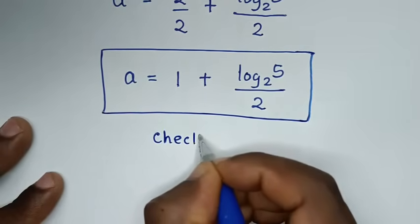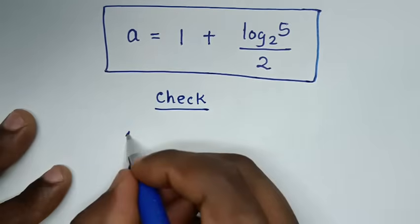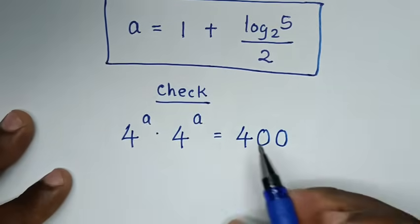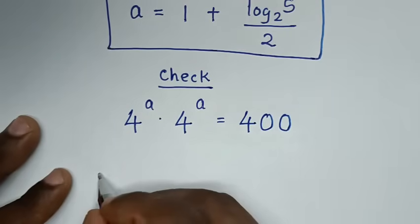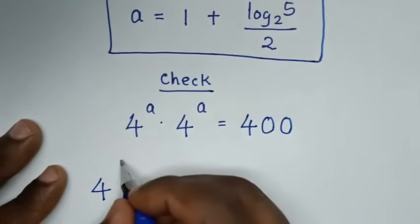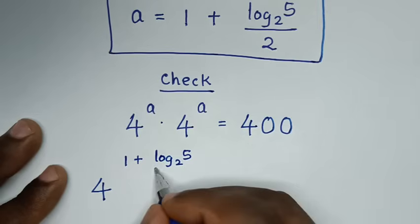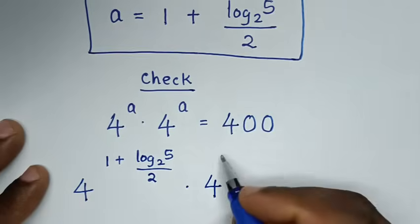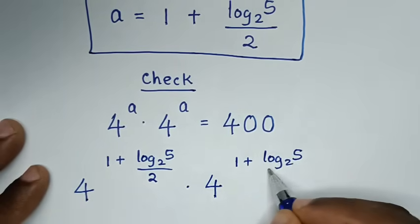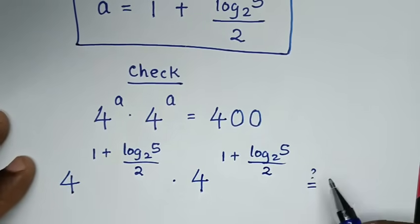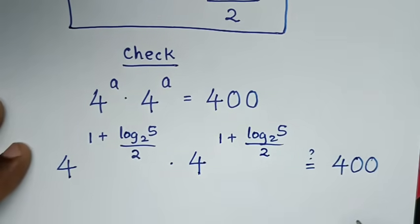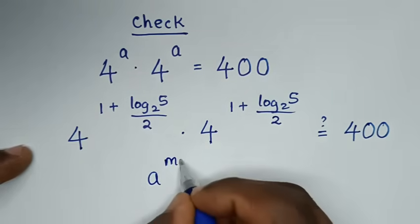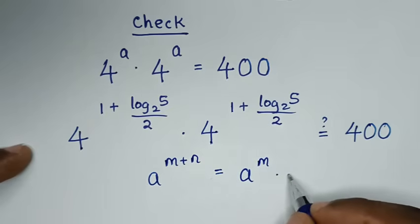To check, from our problem which is 4 power of a times 4 power of a is equal to 400, we substitute our answer. So it will be 4 power of 1 plus log of 5 base 2 over 2, times 4 power of 1 plus log of 5 base 2 over 2. Is it equal to 400? This part is in the form of the rule a power of m plus n, which is equal to a power of m times a power of n.